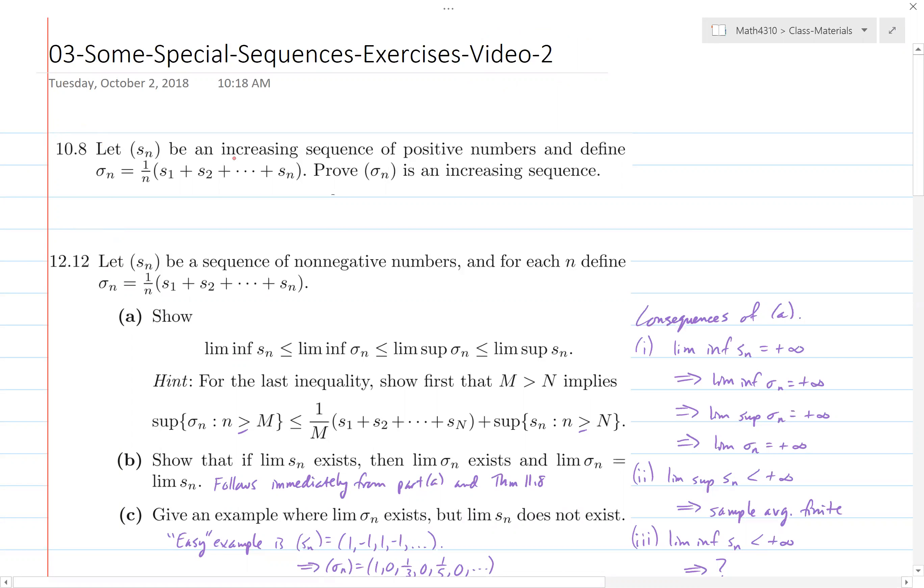So in 10.8 we have an increasing sequence of positive numbers Sn and then we define basically this moving sample average. As we go down the sequence Sn, as more terms come about, we just average them with all the previous terms to define this new sequence in terms of the averages of the first n terms in the sequence Sn. And then if Sn is increasing, what we have to prove is that this sigma n sequence of averages increases.